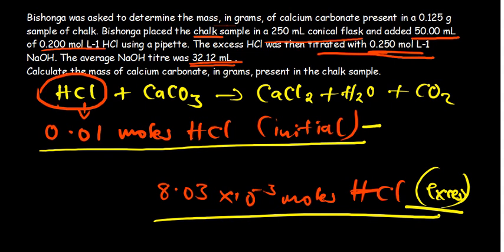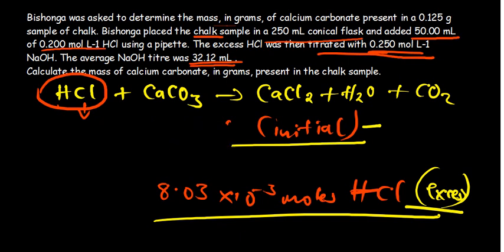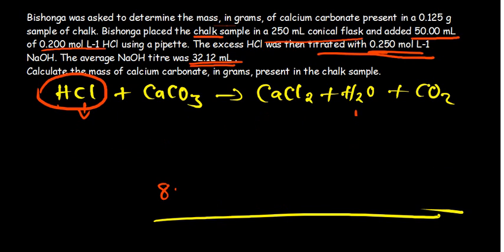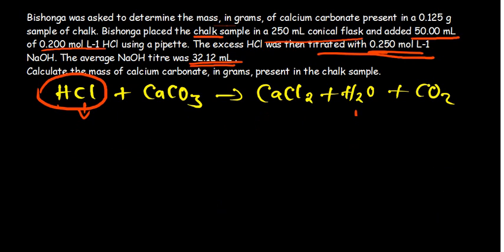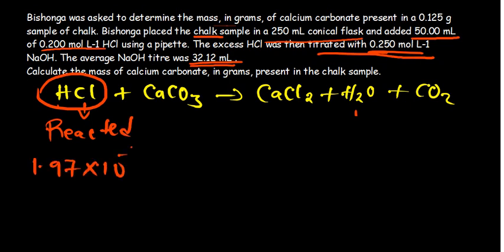The difference between 0.01 moles initially present and 8.03 × 10⁻³ moles in excess gives us 1.97 × 10⁻³ moles. These are the number of moles of hydrochloric acid that had reacted in the first reaction.